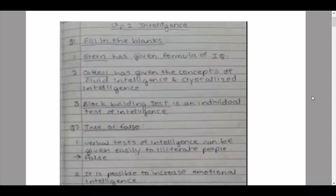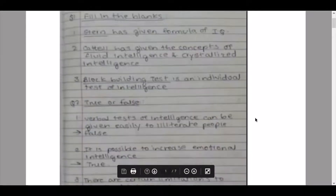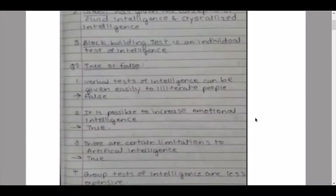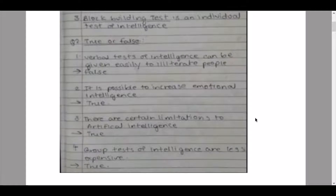The answer for sub-question two is option C, block building test. Continuing to question number two, state whether the following statements are true or false. Sub-question one: 'Verbal tests of intelligence can be given easily to illiterate people' — the answer is false. Sub-question two: 'It is possible to increase emotional intelligence' — the answer is true. Sub-question three: 'There are certain limitations to artificial intelligence' — the answer is true.